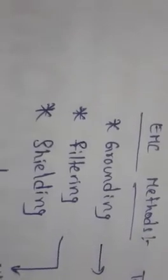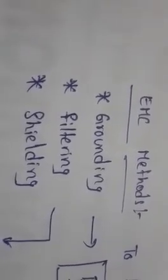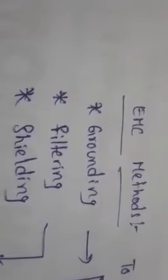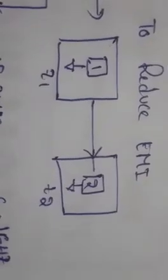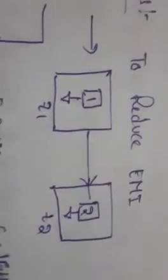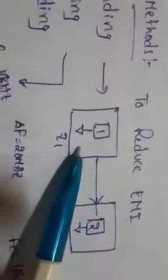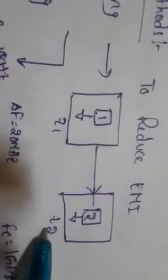Suppose we are having two circuits that are going to interfere with each other. For that purpose we need to make them get proper grounding. So if you take the two devices that are going to interfere with each other, we have to provide grounding to both the circuits.